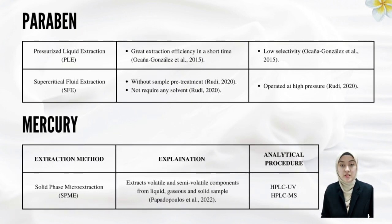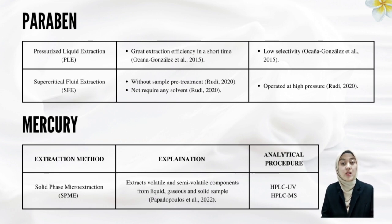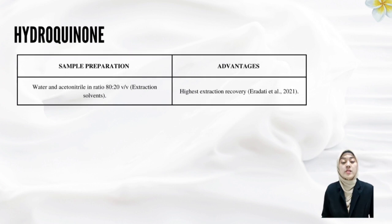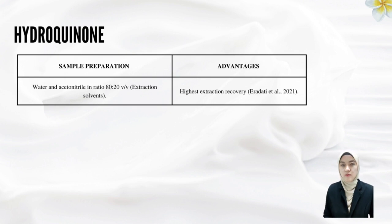Solid-phase microextraction was used for mercury, as this method extracts volatile and semi-volatile components from liquid, gas and solid samples rather than using dry aging methods. Meanwhile, water and acetonitrile in the ratio of 80:20 volume per volume were used as the extraction solvent for hydroquinone, as it yields the highest extraction recovery.